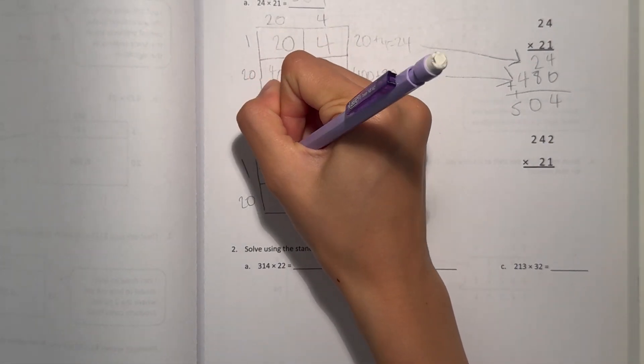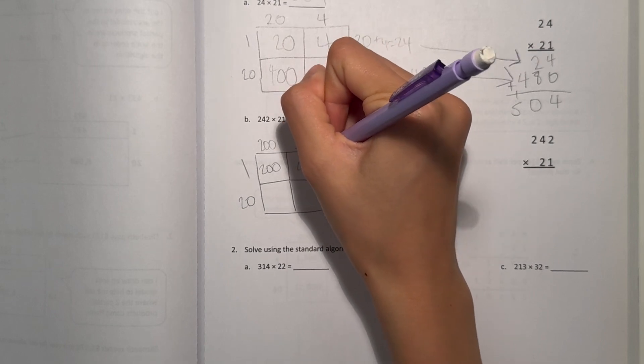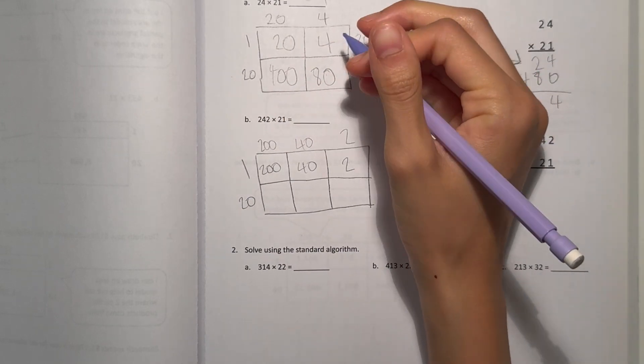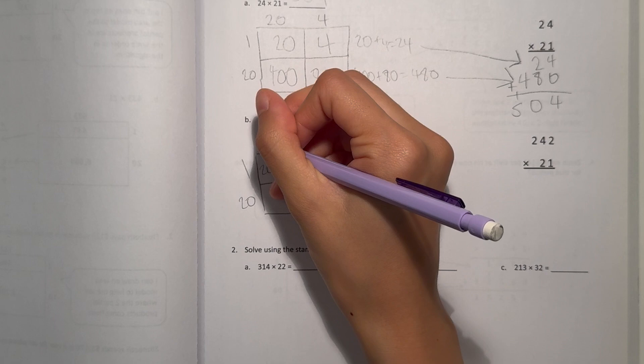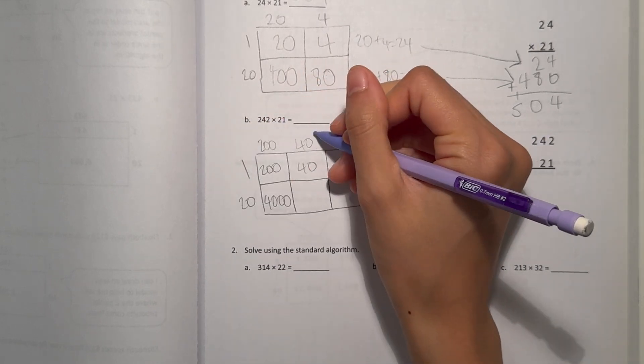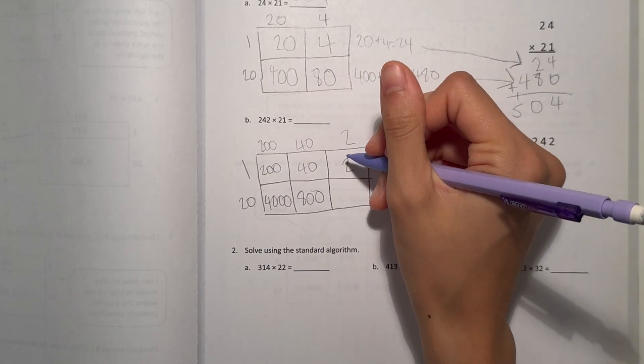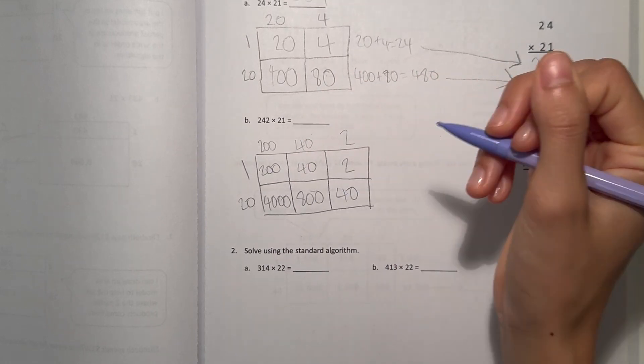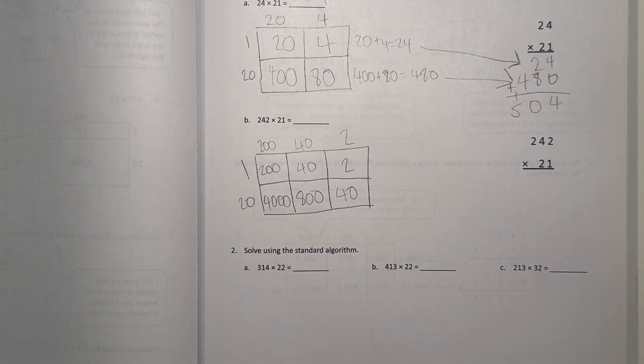1 times 200. That's 200. That's 40. And that's 2. 20 times 200. 2 times 2 is 4. And add the zeros. 2 times 4 is 8. Add the zeros. 2 times 2 is 4. And add 1, 0. So now let's do the standard algorithm.